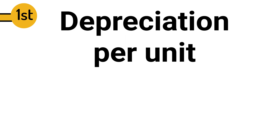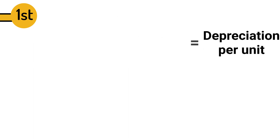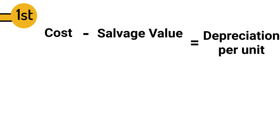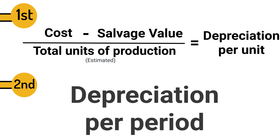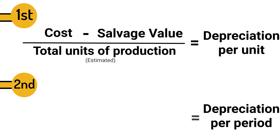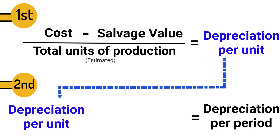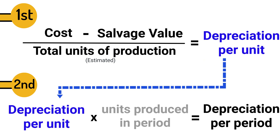To compute depreciation for a period, we first need to compute depreciation per unit. To do this, we take the asset's total cost, minus salvage value, and then divide by the total units expected to be produced during its entire useful life. Next, we compute depreciation for that period by multiplying the depreciation per unit by the units produced in that period.